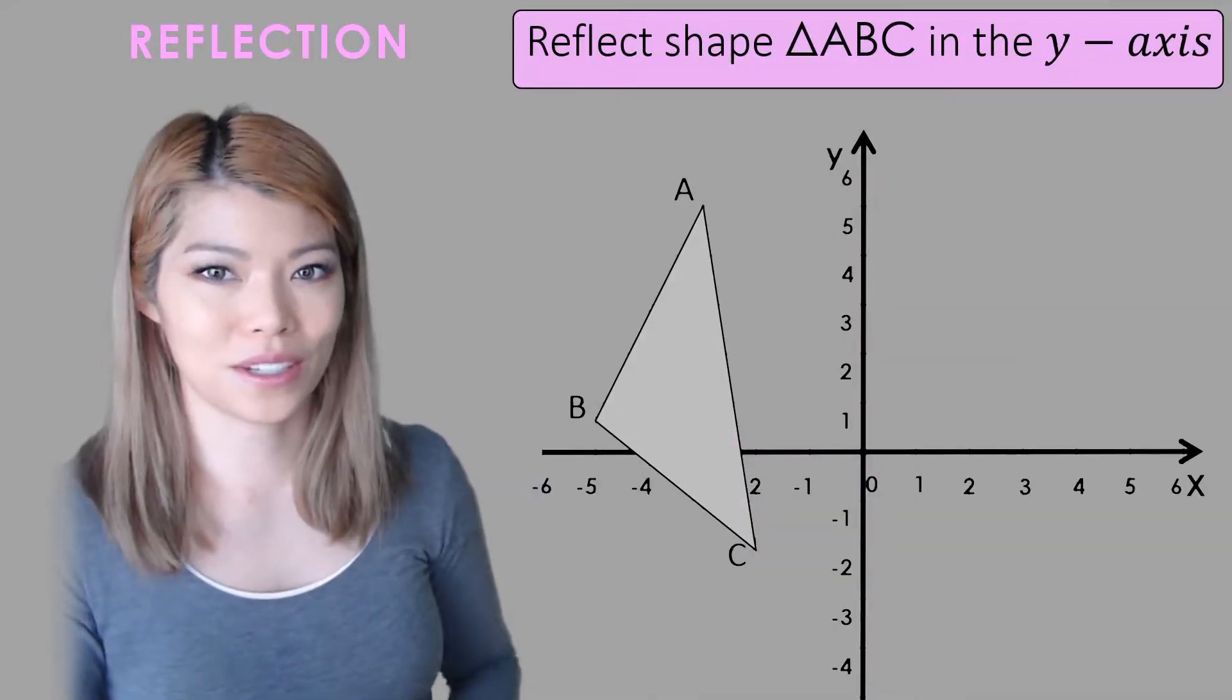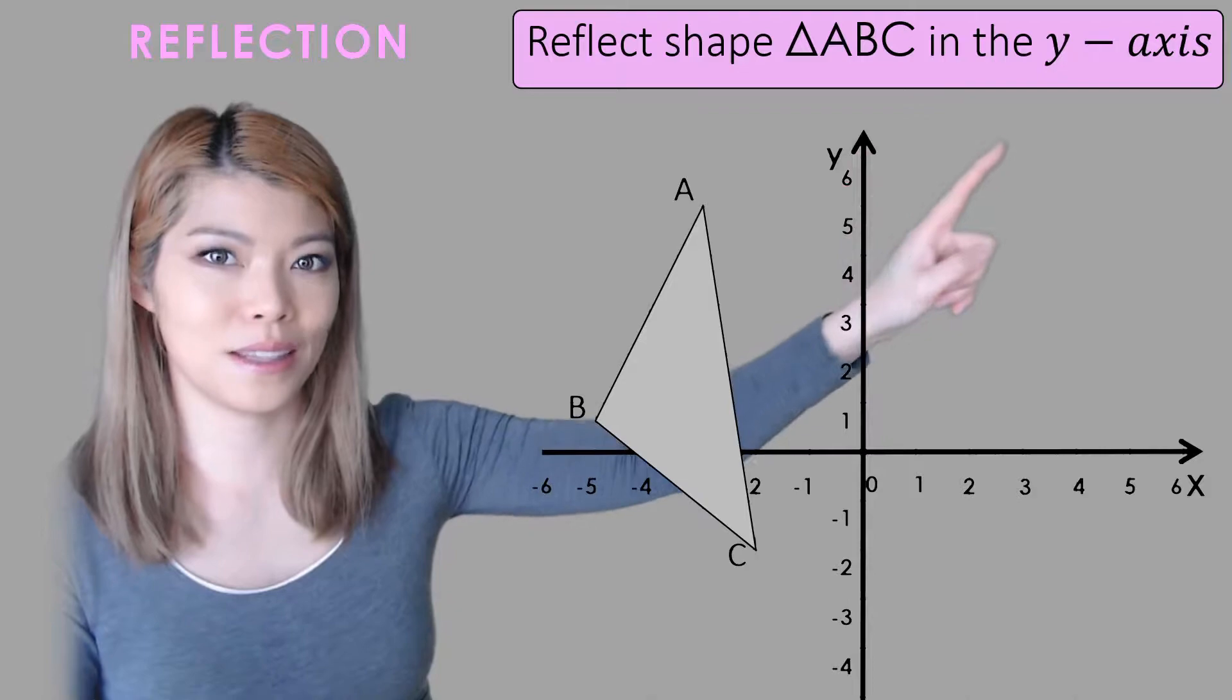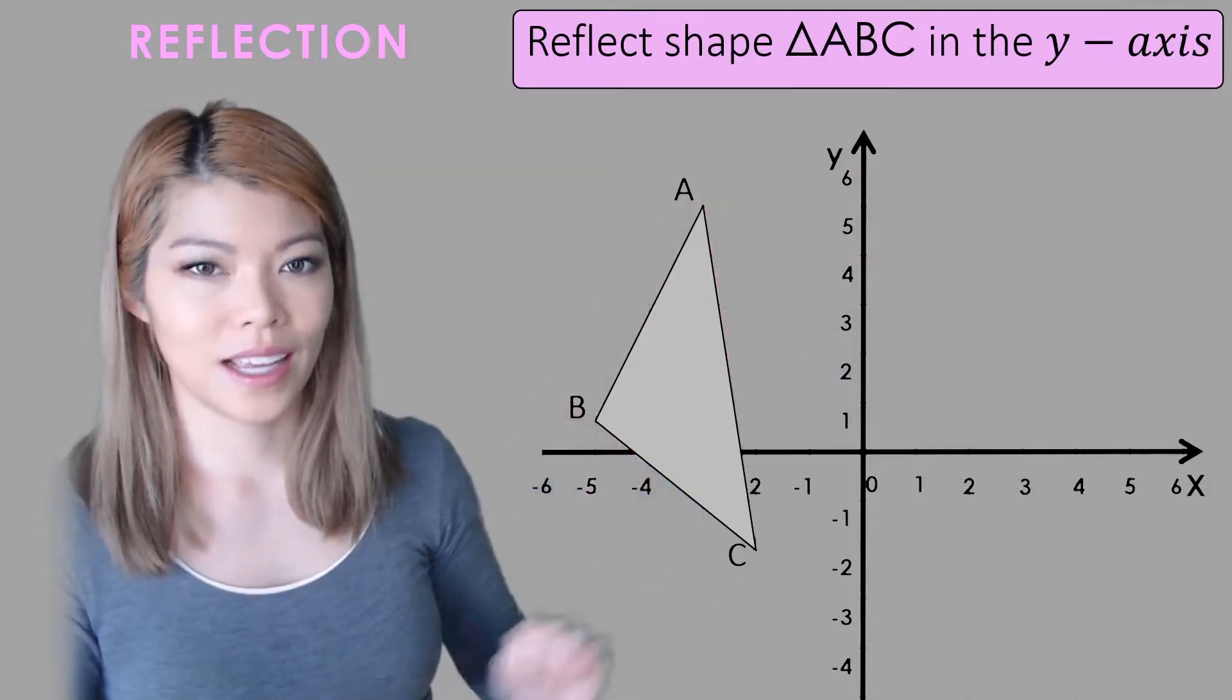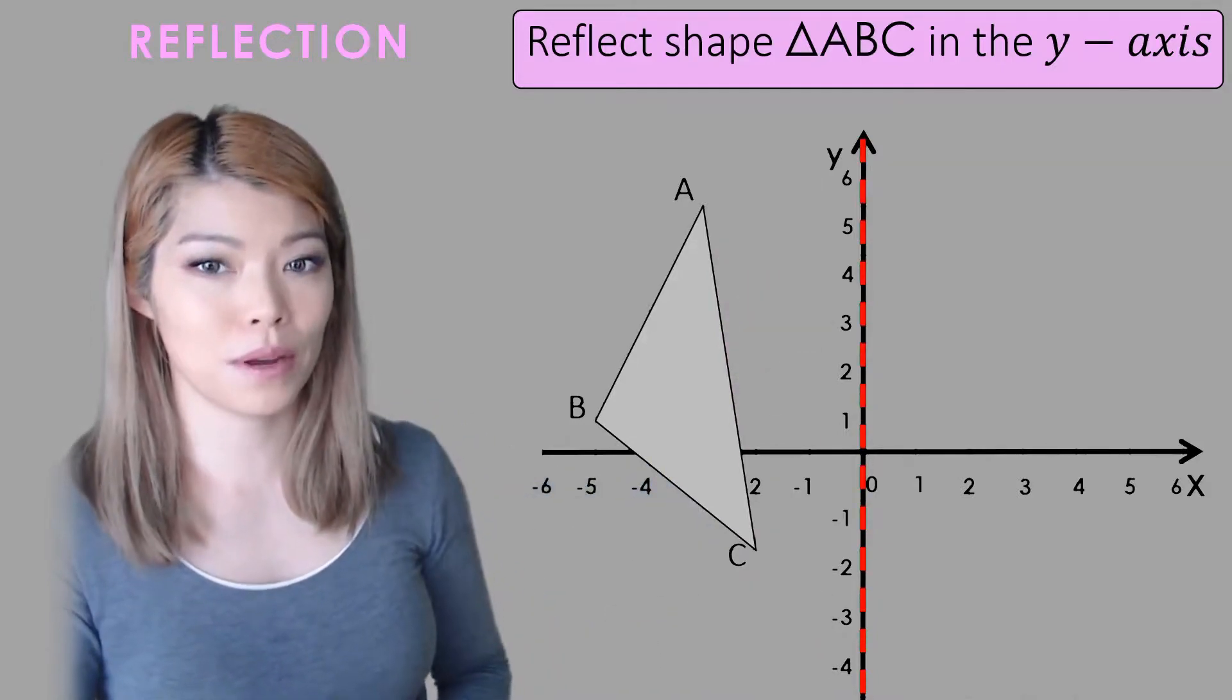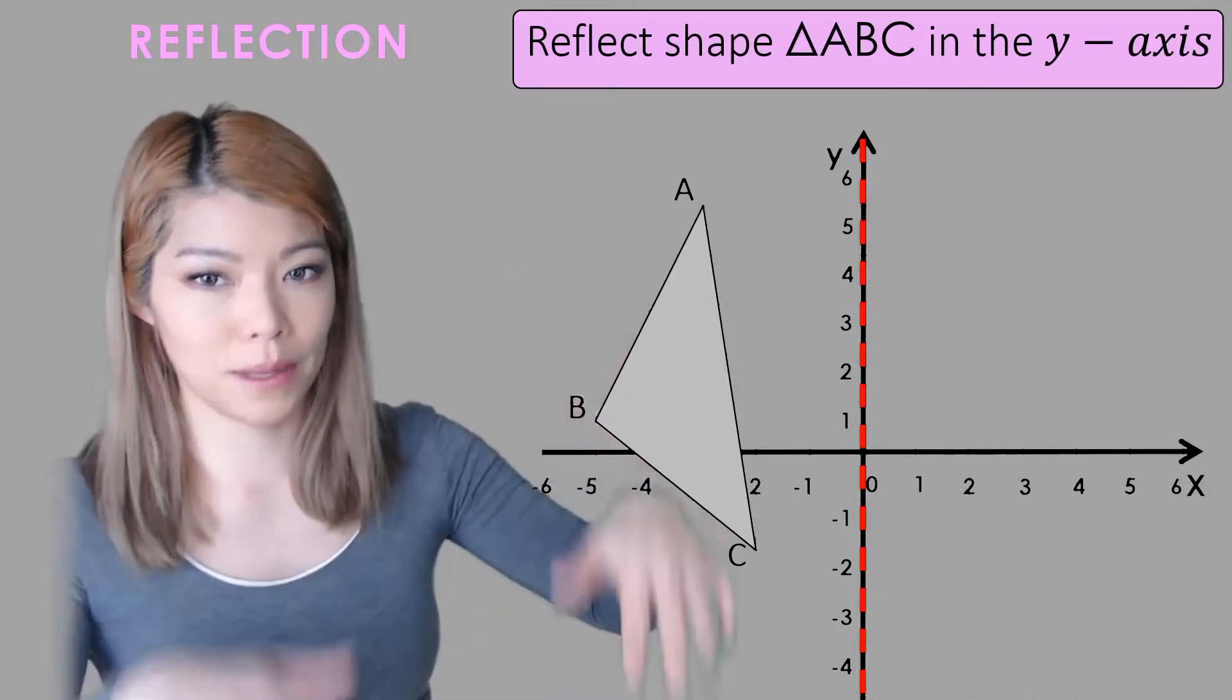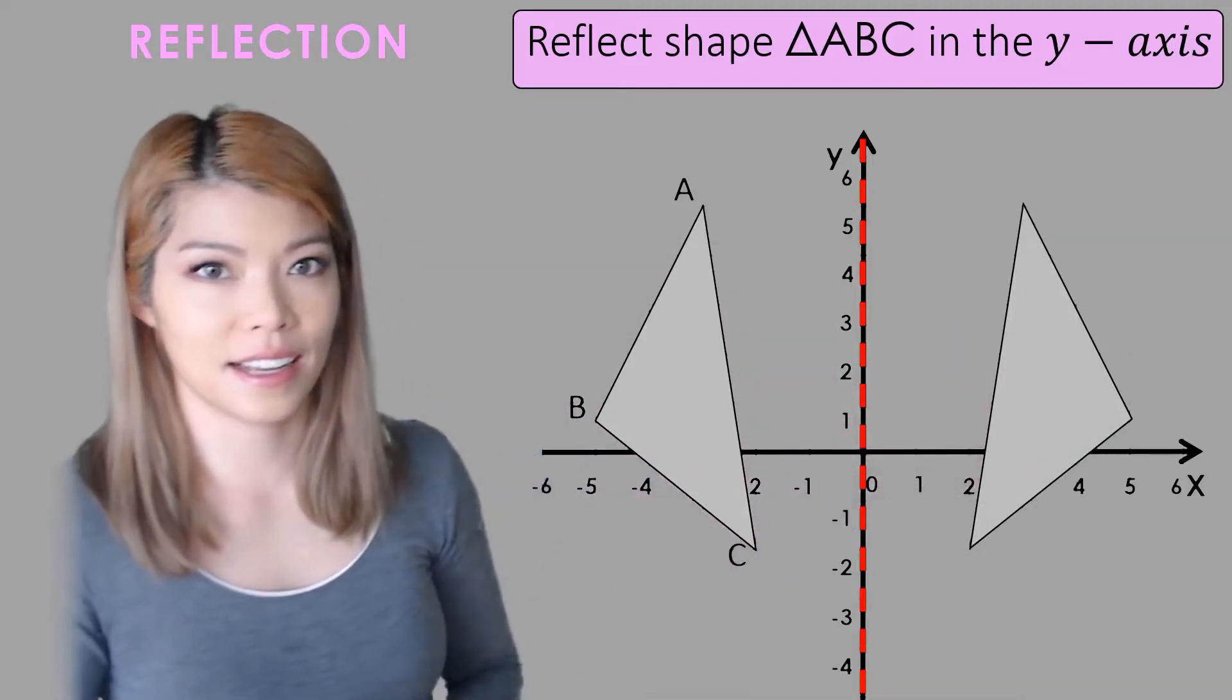Let's read this question: reflect shape ABC in the y-axis. This is shape ABC. In the y-axis means that the y-axis is going to be a mirror. So the triangle is not going to flip this way, it's going to flip over the other side like so.